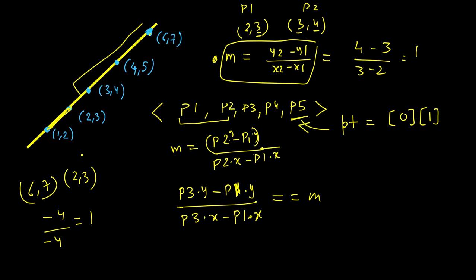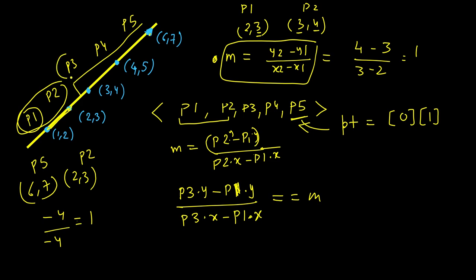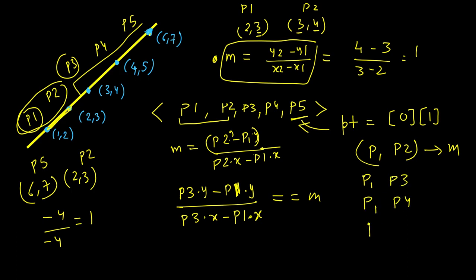To summarize the approach: calculate the slope using the first two points p1 and p2, then compare the slope from p1 to each remaining point — p1-p3, p1-p4, p1-p5. If all of these slopes are the same as the initial slope, all points lie on the same line.